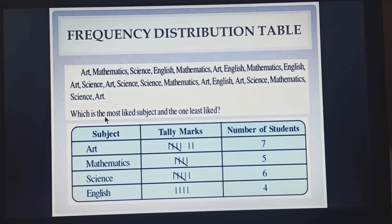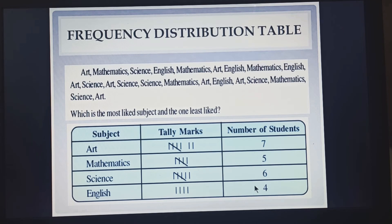Now here is the question which says which is the most liked subject. The most liked subject is the one with the highest frequency. Here we can see it is the number 7, and 7 is for arts. So the most liked subject is arts. The least liked subject will be the least frequency. Here we are having the number 4, and number 4 is for english. So the least liked subject is english.